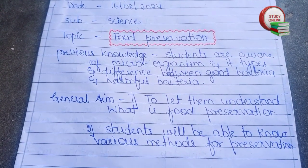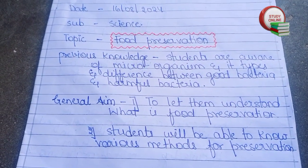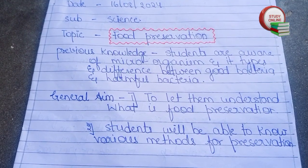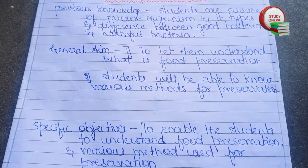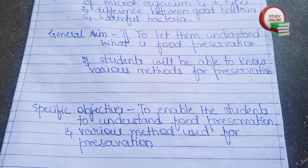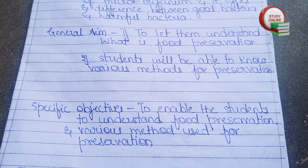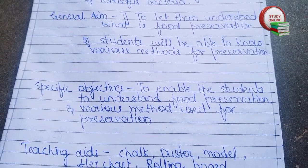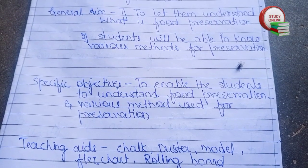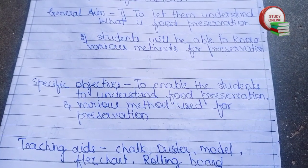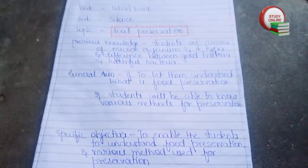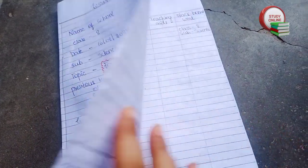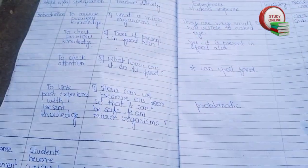For previous knowledge, we have to write whatever students are already aware of. For general objectives, we have to write what we basically want to teach to students. For specific objectives, we have to write what our motives and goals are behind teaching this specific topic. And for teaching aids, we have to write all the teaching aids that we are going to use.